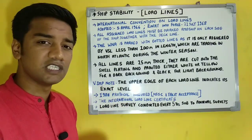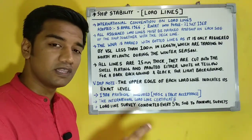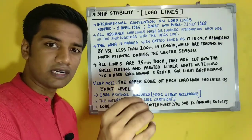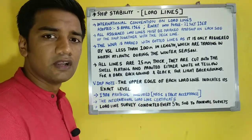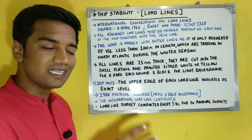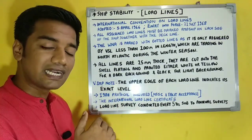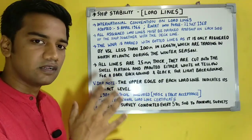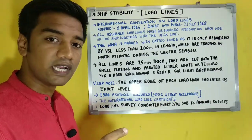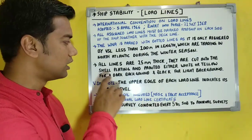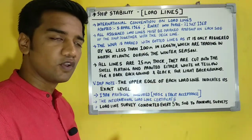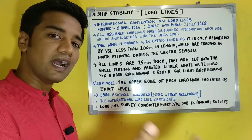All assigned load lines must be marked amidships on each side of the vessel, along with the deck line. The Winter North Atlantic load line is marked as a dotted line because it applies only to vessels less than 100 meters in length which trade in the North Atlantic region during winter. Another important surveyor question: the thickness of load lines is 25 mm. All load lines are 25 mm thick. They are cut into the shell plating and painted either white or yellow on a darker background, or black on a lighter background.